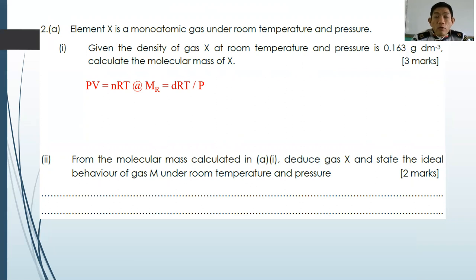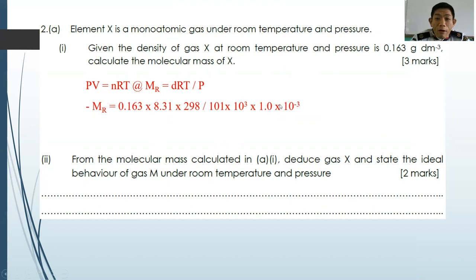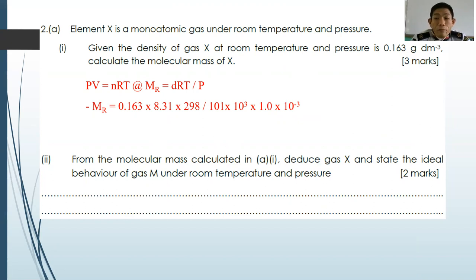The density is given as 0.163 g dm⁻³. To convert dm³ to m³, multiply by 10⁻³. Since density is mass over volume, the 10³ factor is brought downward. The calculation becomes: 0.163 × 8.31 × 298 divided by 101 × 10³ × 1.0 × 10³. Press your calculator — the molar mass is approximately 4.00 g mol⁻¹ in three significant figures, matching the significant figures given in the question.